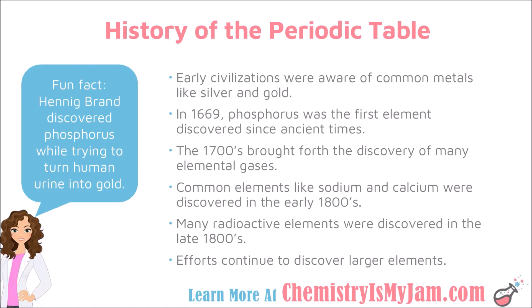And it's an interesting story. Hennig Brand discovered phosphorus trying to turn human urine into gold. I'll put a link to an article about it in the description, but basically he was burning human urine and trying to distill gold out of it.